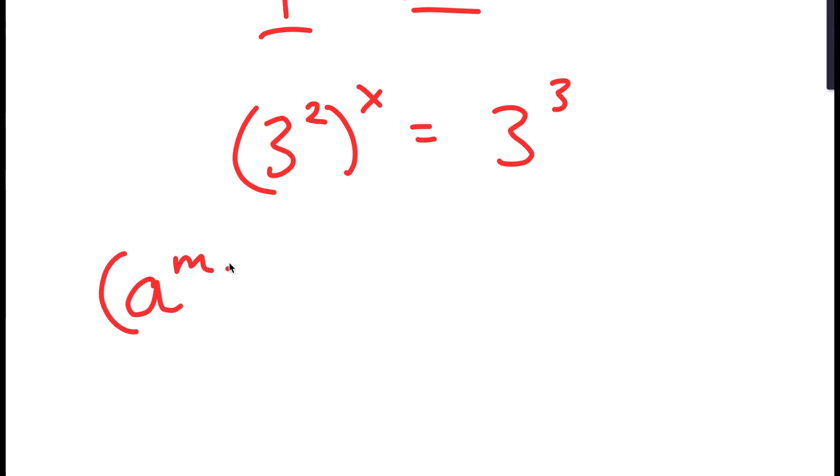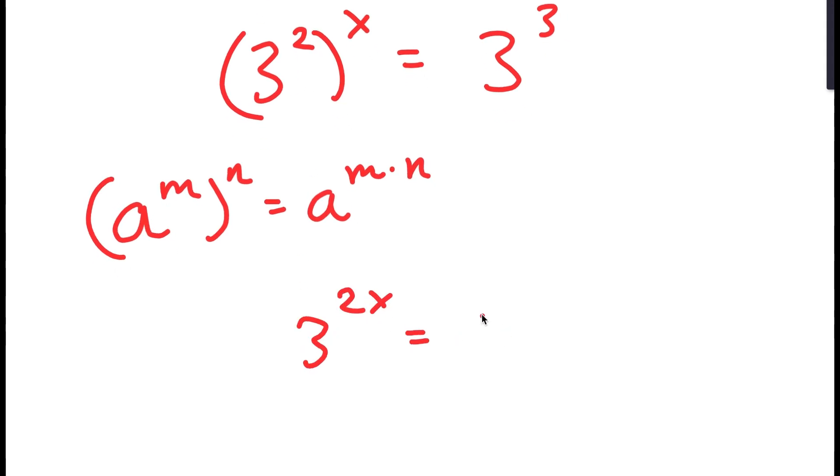Now, if I have something in the form a to the power of m to the power of n, this is equal to a to the power of m times n. So 3 to the power of 2 to the power of x is going to equal 3 to the power of 2x, which is equal to 3 to the power of 3.